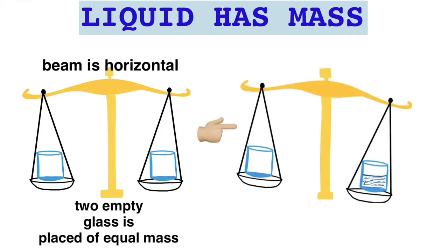Now if we put some water in the right side glass we will see that the right side pan will come down and the left side pan will move up. The beam of the beam balance will tilt towards the right pan.